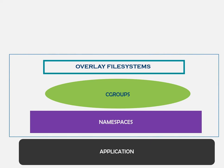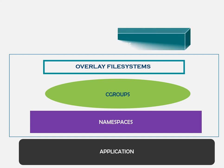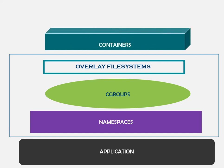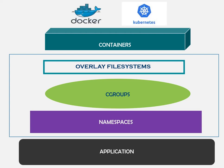So when you take an application and apply these mechanisms to it, what you get is a container. When you talk about technologies such as Docker and Kubernetes, these technologies are essentially using these key mechanisms behind the scenes to make it easier for us to containerize an application and deploy and orchestrate them at scale.